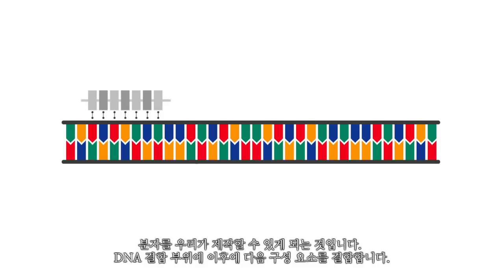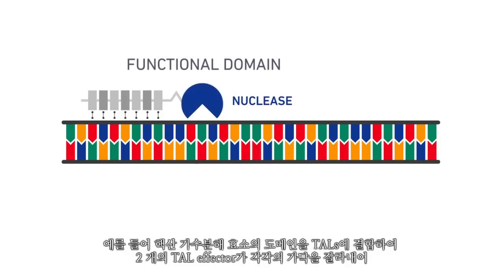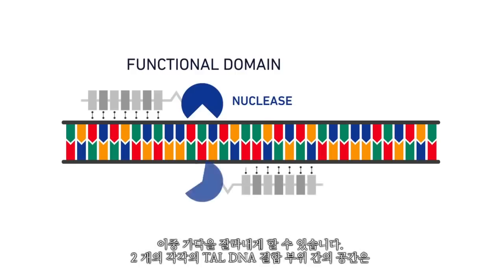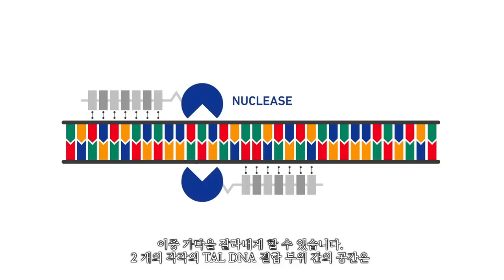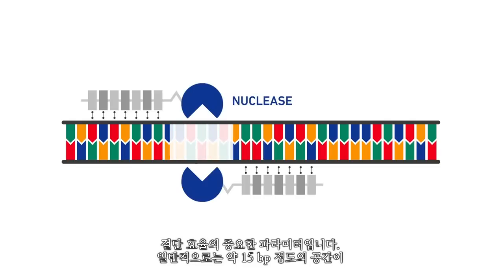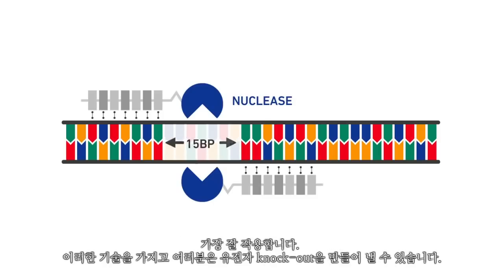To the DNA binding part, we fuse a second part. For example, TALs with nuclease domains are used to generate double-stranded breaks by using two talifectors to each cleave a single strand. The space between the two individual TAL DNA binding sites is an important parameter for effective cleavage. Usually, a spacer of about 15 base pairs works well.